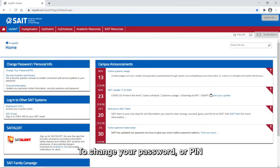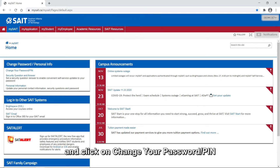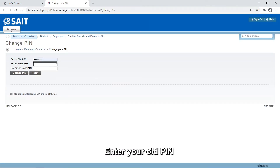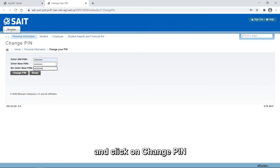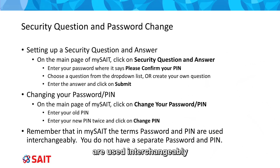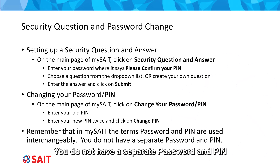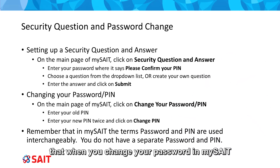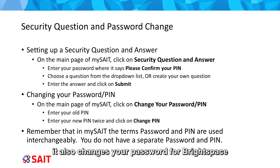To change your password or PIN, go to the main page of MySAIT, and click on Change your password/PIN. Enter your old PIN, enter your new PIN twice, and click on Change PIN. Remember that in MySAIT, the terms password and PIN are used interchangeably. You do not have a separate password and PIN. It is important to note that when you change your password in MySAIT, it also changes your password for Brightspace.